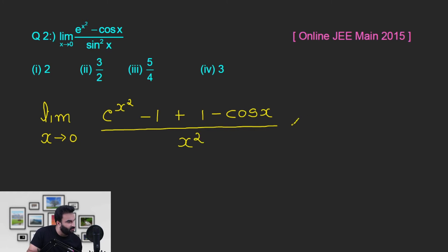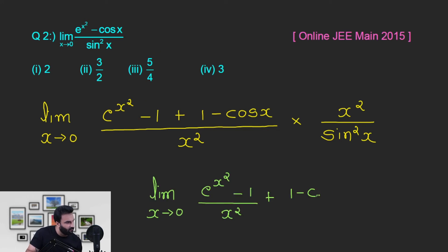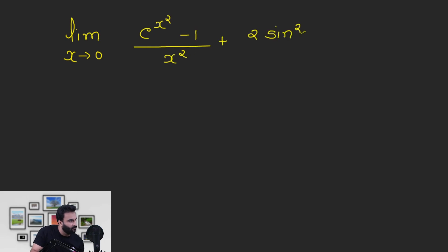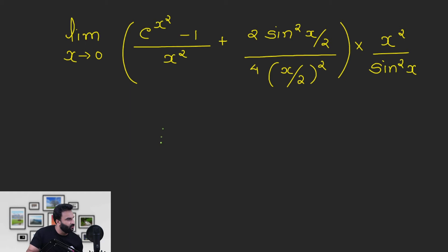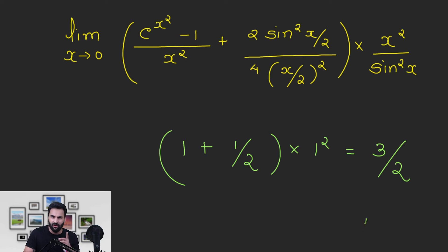So x square create, divide, multiply — we need to do this sin square x as well. Now see, e raised to power f(x) minus 1 upon f(x), and f(x) is equal to... 1 minus cos x upon x square — यह हम already calculate कर चुके हैं, इसकी value ध्यान रखो — तो limit लगाने के बाद यह बन गया 1 by 2. x upon sin x, x tending to 0 पर होता है 1, 1 का square — answer आ गया 3 by 2. बस, समझ में आए, आगे बढ़ते हैं।